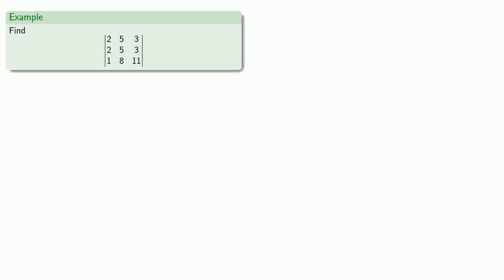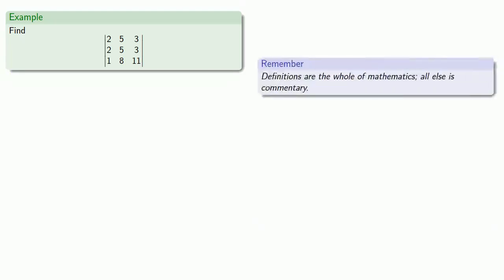And at this point, definitions are the whole of mathematics — all else is commentary. We know how to calculate the determinant of any matrix. Well, more or less. There is a lot of commentary to go.